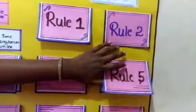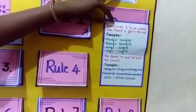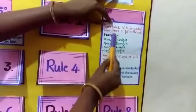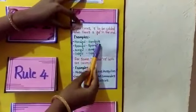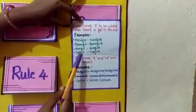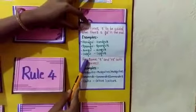Fifth rule: sometimes S to be added when there is a 'ful' in the end. Examples: handful-handfuls, spoonful-spoonfuls, cupful-cupfuls.